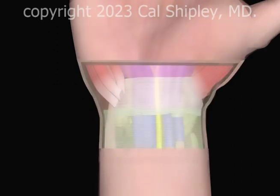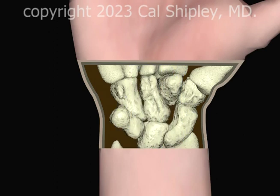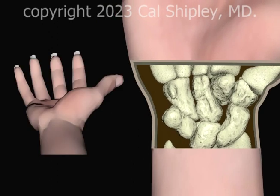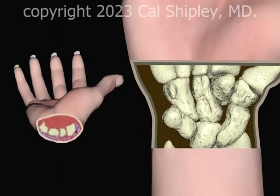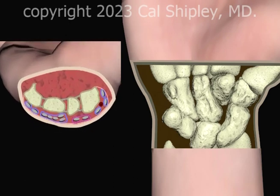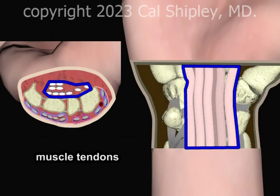Let's start by peeling away the various soft tissue structures until we reach the carpal bones of the wrist, which form the floor of the tunnel. Lying atop the carpal bones is a group of muscle tendons responsible for flexion of the hand and fingers.